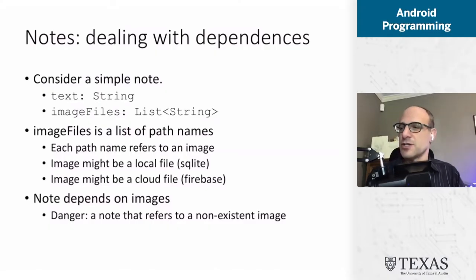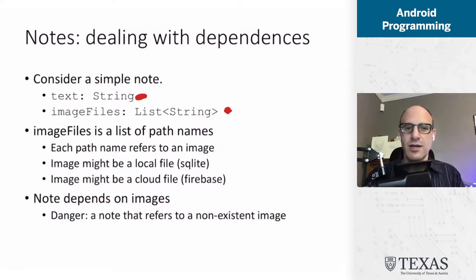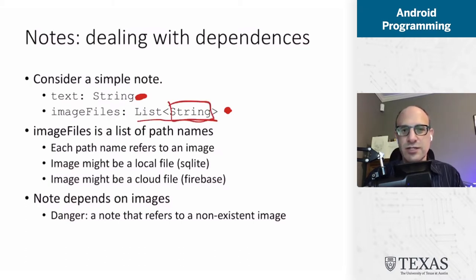Our application is going to have notes. A note is a piece of text and zero or more images. So a note has a string — the piece of text — and then a list of image files, which is a list of strings. What that string refers to is going to be different in the SQLite case versus the Firestore case.